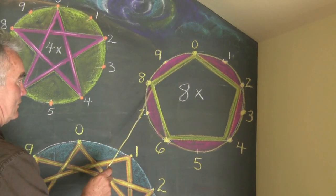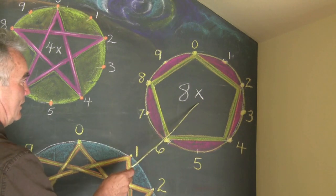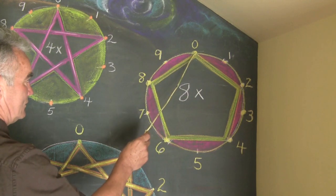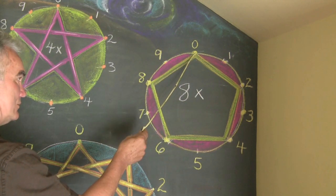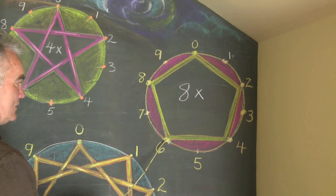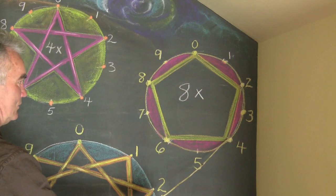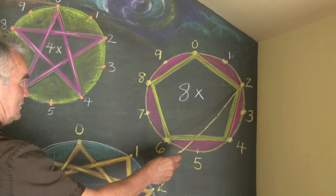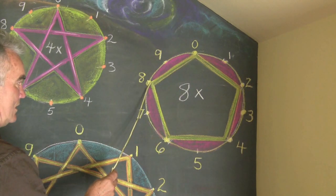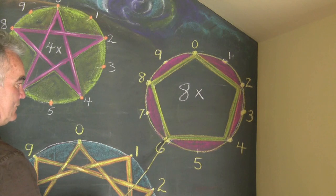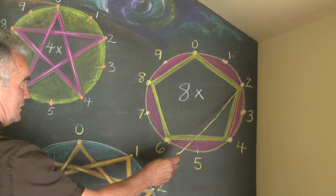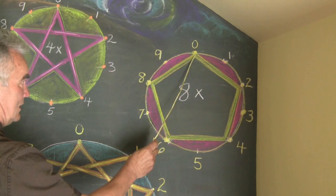Now the exact same circle is used for the eight times tables. Instead of going clockwise, we're going counterclockwise. So starting at zero: zero times eight is zero, one times eight is eight, two times eight is sixteen, three times eight is twenty-four, four times eight is thirty-two, five times eight is forty, six times eight is forty-eight, seven times eight is fifty-six, eight times eight is sixty-four, nine times eight is seventy-two, and ten times eight is eighty.